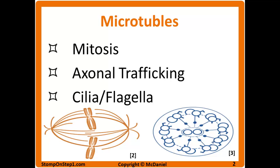Cilia are little tails of the cell made up of many microtubules connected by motor proteins. As the motor protein walks along one microtubule, it changes that microtubule's position relative to the others, resulting in a bending or swimming motion. You can see at the bottom left a reminder of mitosis, and on the bottom right a cross section of a cilia, though it's not too important to memorize the exact structure.